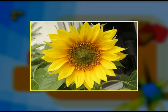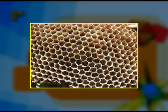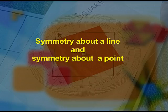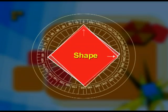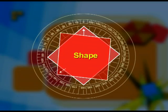Symmetry is an important geometrical concept found in man-made things as well as nature. Nature has gifted us with some of the most astonishing and perfect examples of symmetry, such as flowers, beehives, etc. We know symmetry is of two types: symmetry about a line, and symmetry about a point, which is also known as rotational symmetry. A figure possesses rotational symmetry when it takes its original position more than once in a complete rotation of 360 degrees.